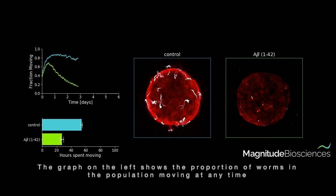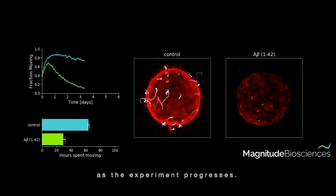The graph on the left shows a proportion of worms in the population moving at any time as the experiment progresses.